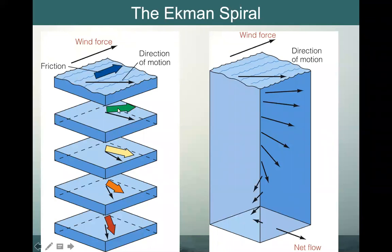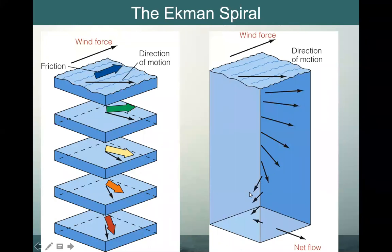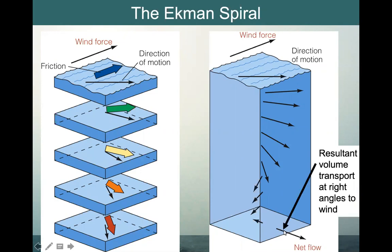The layer of water will pull on the layer below it in the same direction. However, that layer will not go in the exact same direction but will be offset to its right, and so on down the water column. If we take all of these little vectors of motion along the water column and integrate over all those vectors — take the sum — the net flow of the water is in fact at a right angle to the wind.